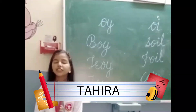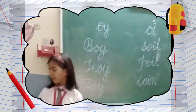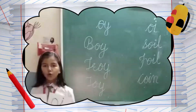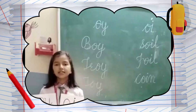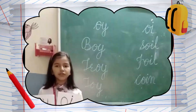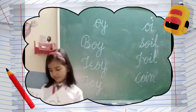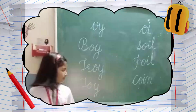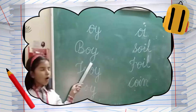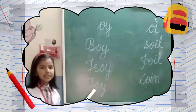My name is Tahira. Today I will teach you vowel diagrams: OI and OY. OY and OI make the sound OI. Repeat after me, students: OI. OI as in boy. OI as in toy.